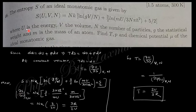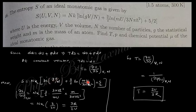The next question: the entropy of an ideal monatomic gas is given as S = S(U, V, N, g, m). To find temperature T: from TdS = dU + PdV at constant volume, dV = 0, so T = (∂U/∂S)_{V,N}. Differentiating S with respect to U gives 3R/2U, so T = 2U/3R. This is the temperature of the ideal monatomic gas.